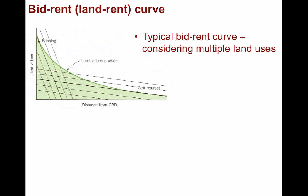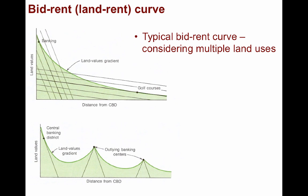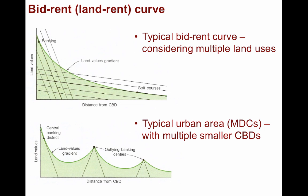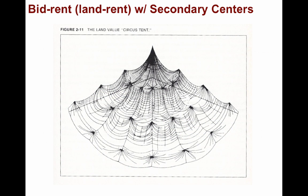However, most cities in the MDCs of the world do not have a single CBD, but many — with one main CBD and several other secondary agglomerations. This graphic shows the hypothetical bid rent of an urban area resembling a circus tent, with land values increasing around secondary centers.